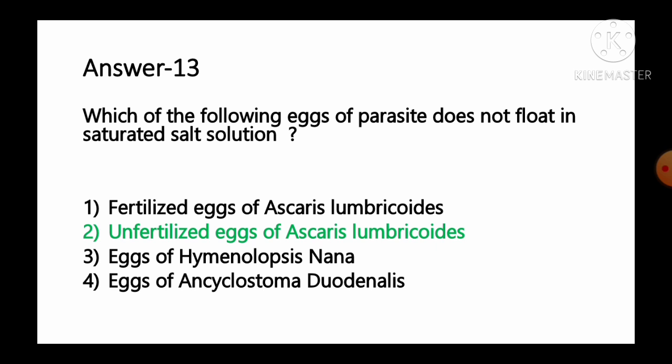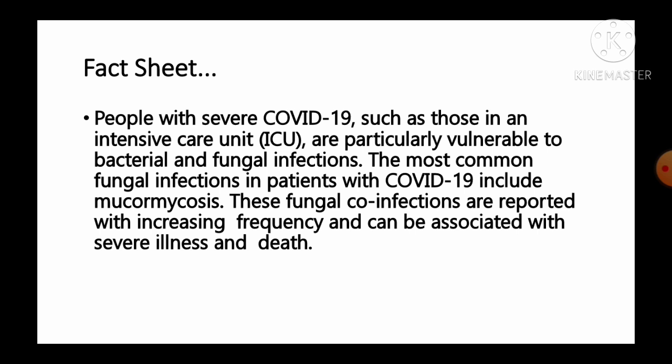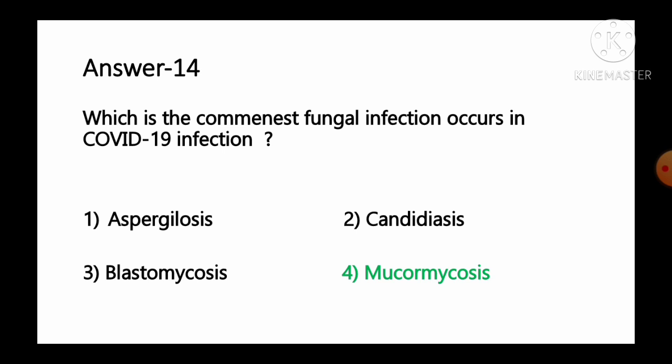Question number 14: Which is the commonest fungal infection occurring in COVID-19 infections? Options: 1 aspergillosis, 2 candidiasis, 3 blastomycosis, 4 mucormycosis. People with severe COVID-19, such as those in the ICU, are particularly vulnerable to bacterial and fungal infections. The most common fungal co-infection in patients with COVID-19 is mucormycosis, which can be associated with severe illness and sometimes death. So option number 4, mucormycosis, is the correct answer.